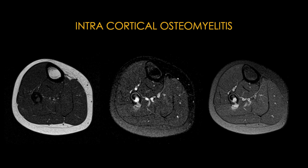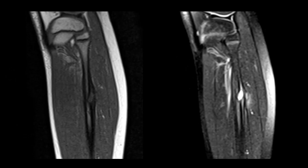We have T2, T2 FATSAT, and T1 FATSAT post-contrast images. We see this small lesion within the cortex on T1. On T2 we can see the lesion within the cortex extending outside to the soft tissues — this is a small intracortical abscess with a small cloaca extending into the soft tissues. The sagittal MRI views are very helpful to evaluate this cortical thickening in both directions. We can see this intracortical abscess, and most importantly, thickening of the cortex in both the endosteal and periosteal directions.